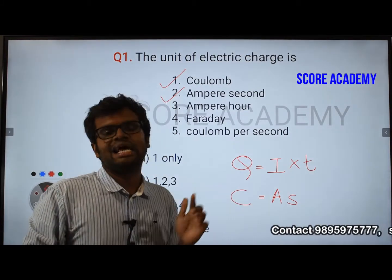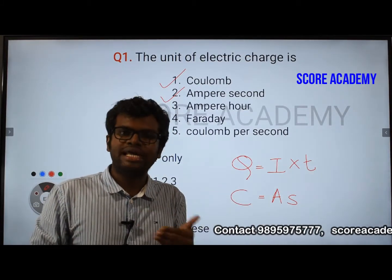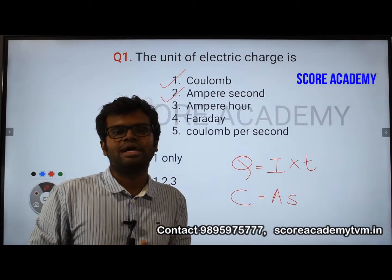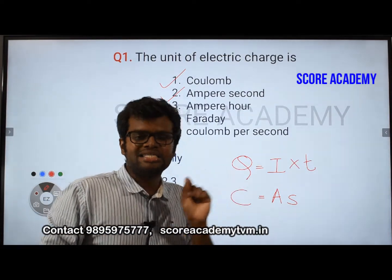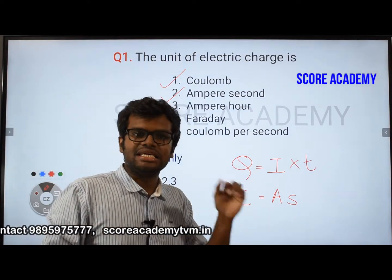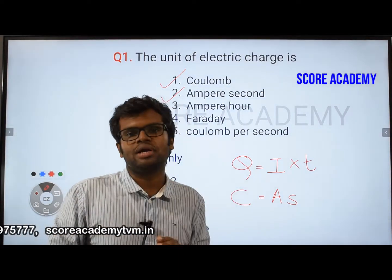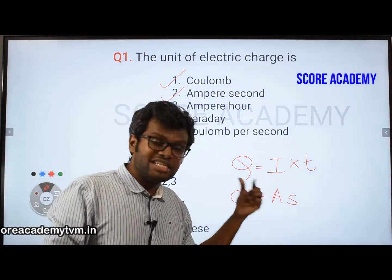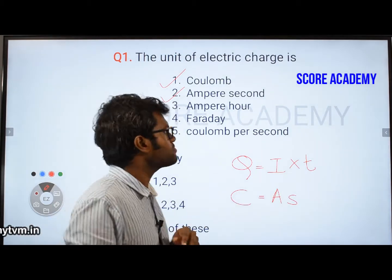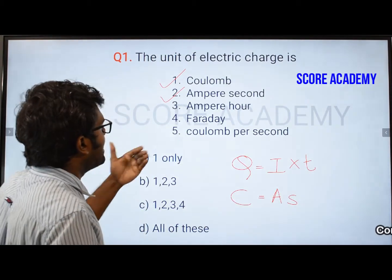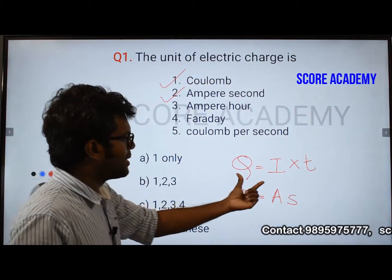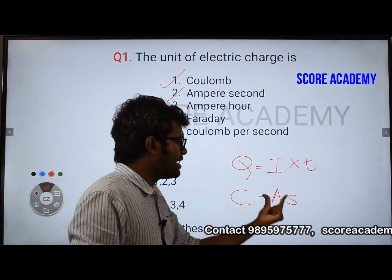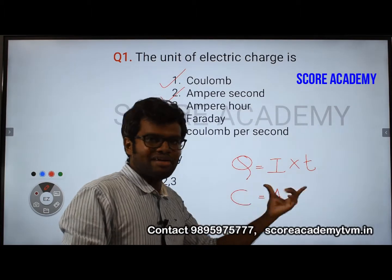Charge is a derived quantity. Voltage is a derived quantity. Ampere is a base quantity. Seconds is a base quantity. That is the base unit. So Coulomb is an ampere-second unit — it was defined in terms of ampere.